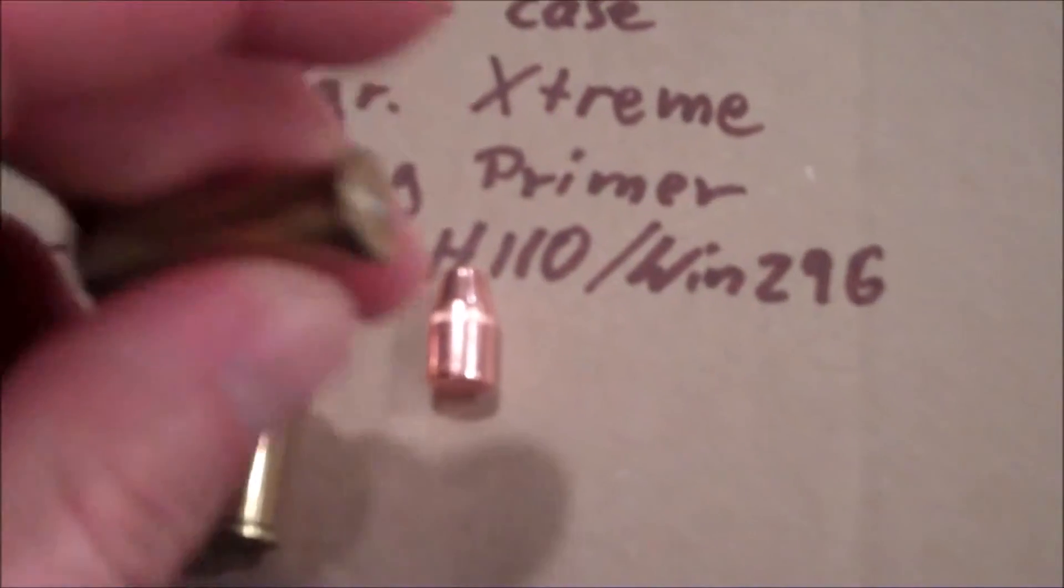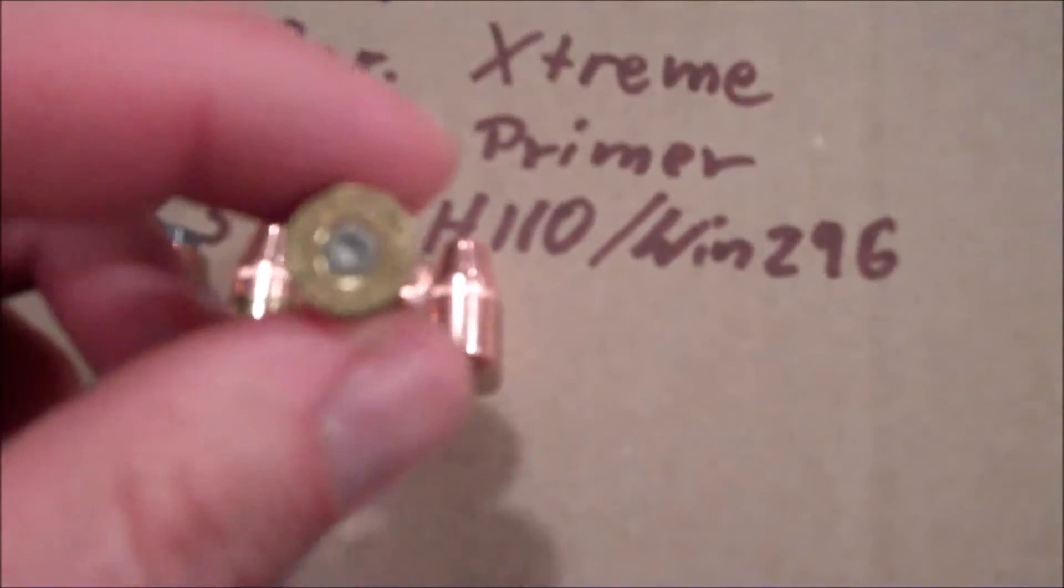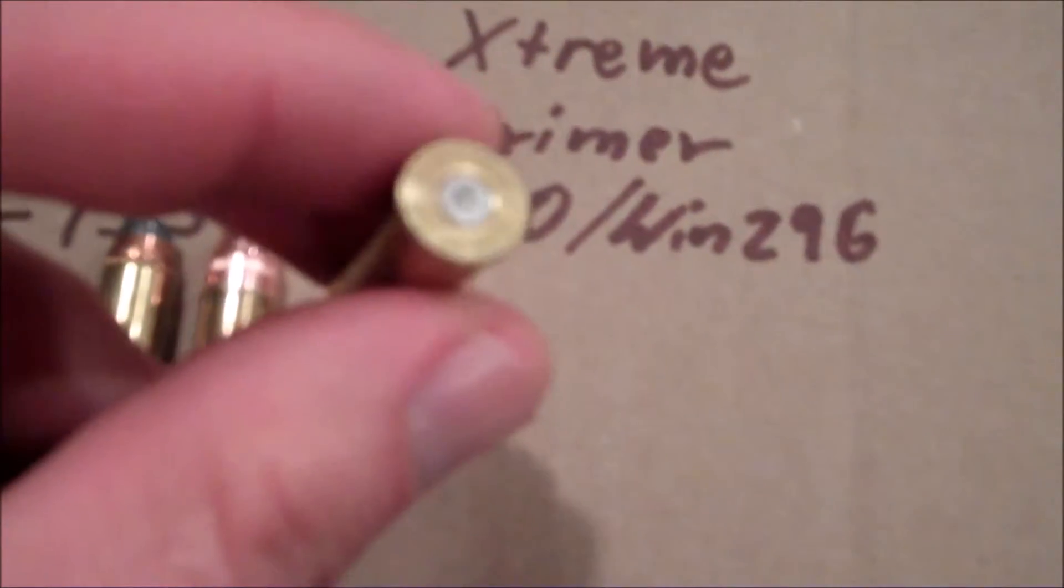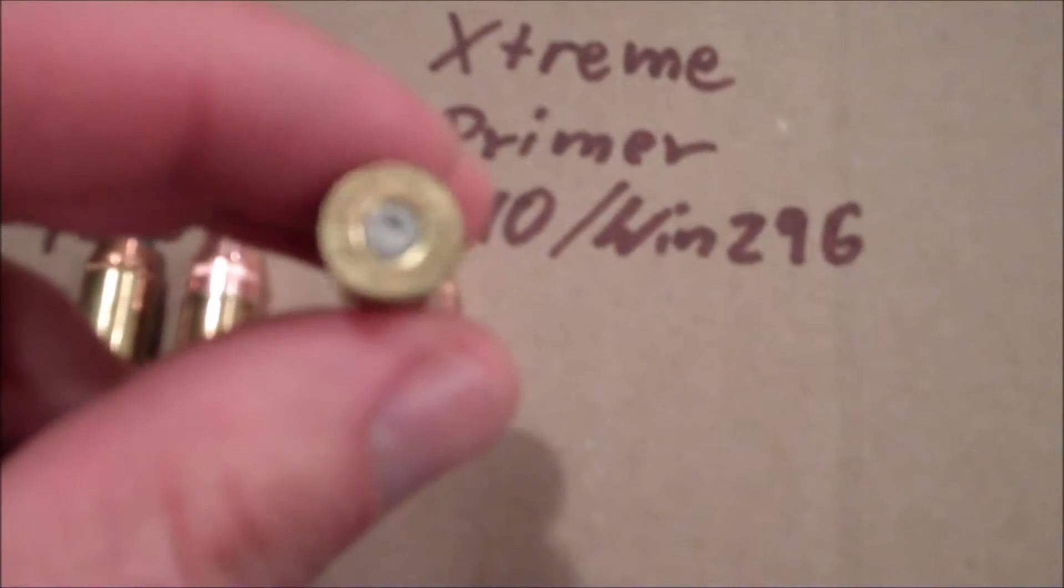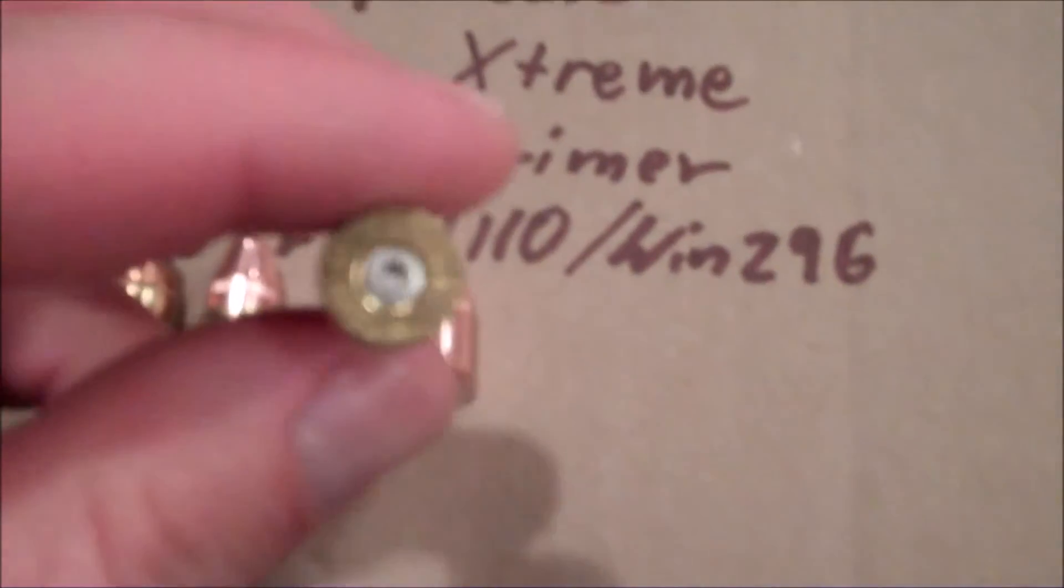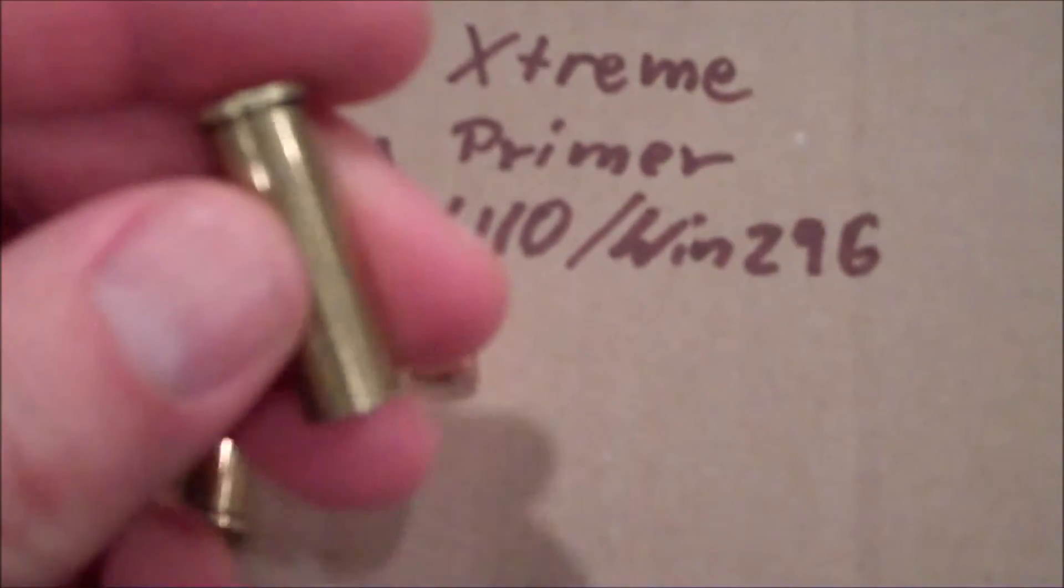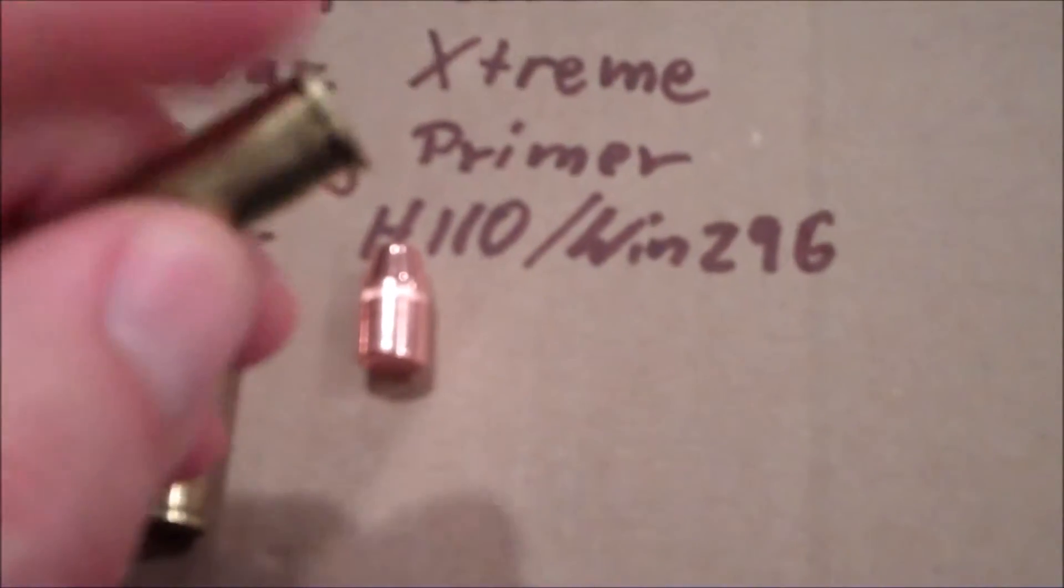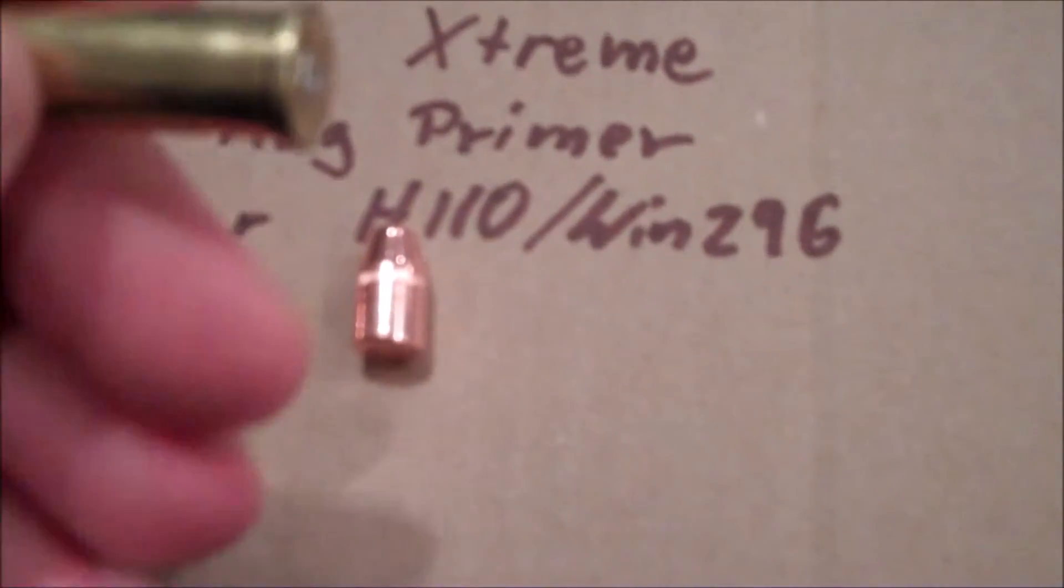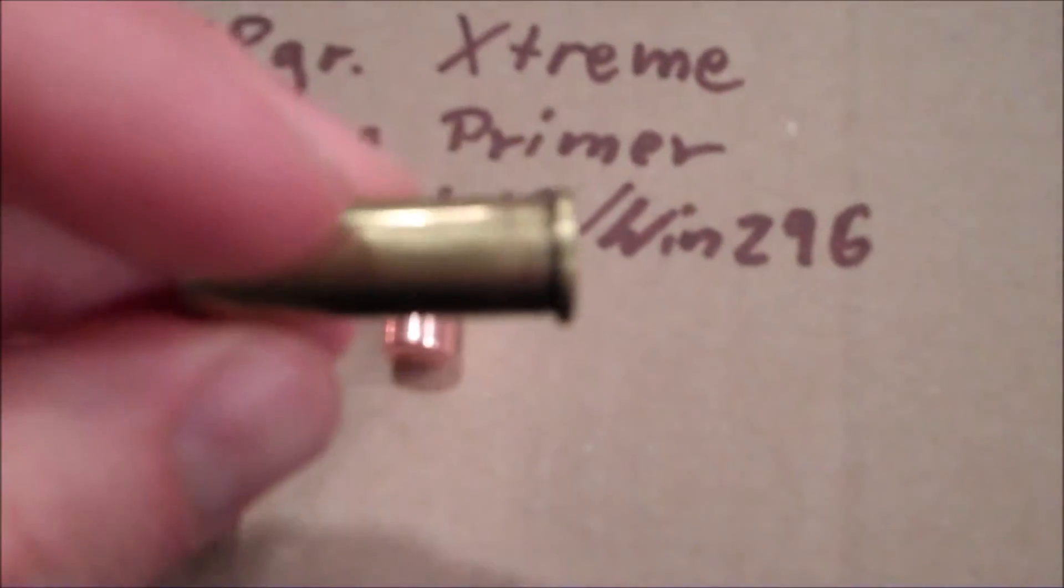And this is actually a fired piece of brass with that load that I just shared with you. And you can see the primer is flattened, but you would expect that from a 357 mag as well. But there are really no signs that worry me in terms of too much case pressure.